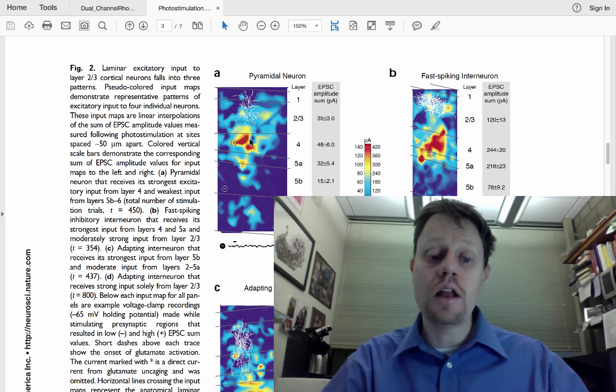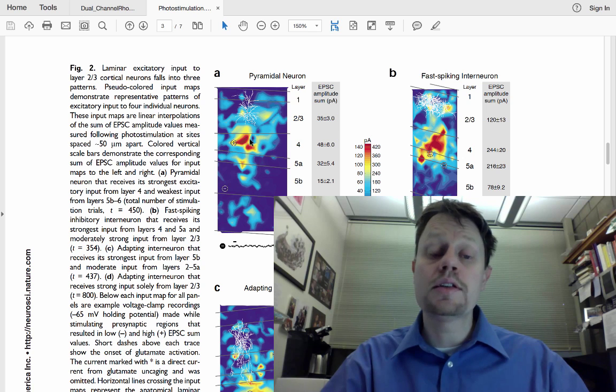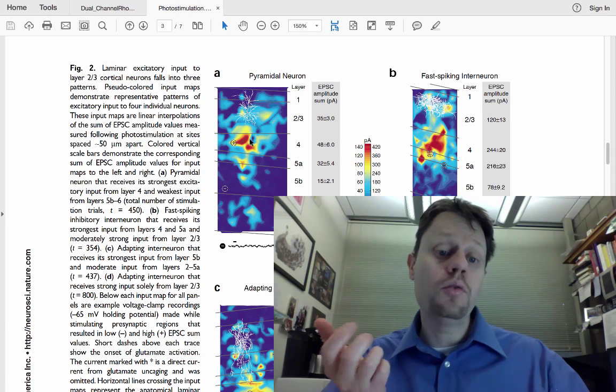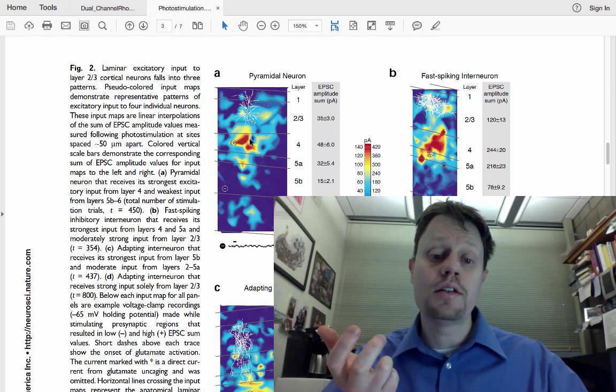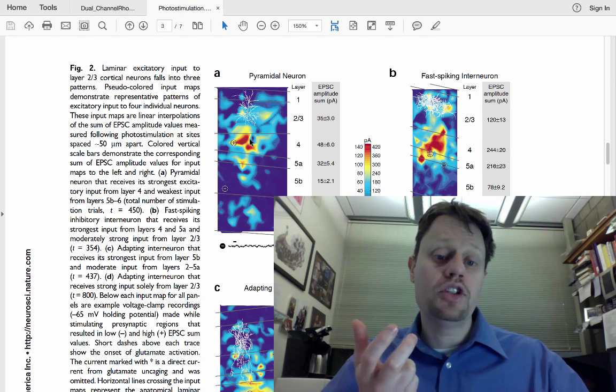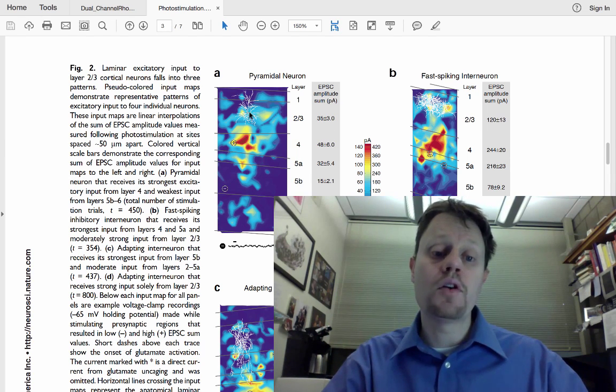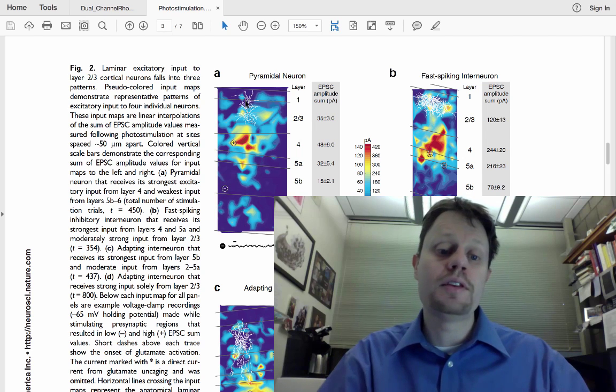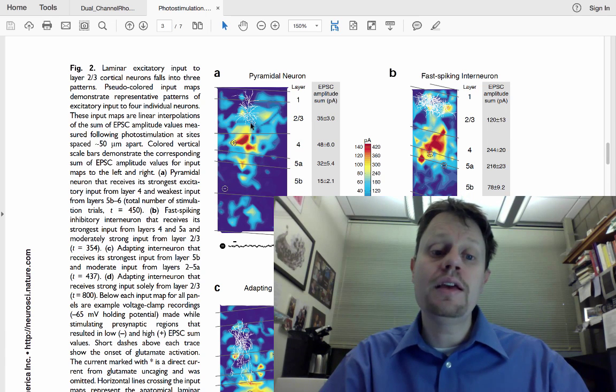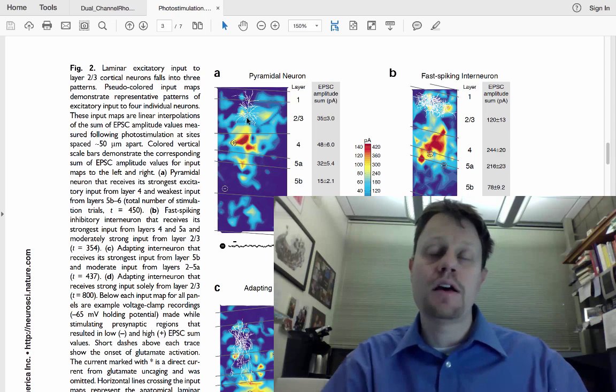And, in fact, with this two-color channelrhodopsin, we could even expand this a little bit further. Maybe we put traditional blue excited channelrhodopsin into excitatory neurons, and this red shifted channelrhodopsin into inhibitory neurons. We then record from a single neuron in layer 2-3, and then we see perhaps that all of the excitatory inputs are made up onto the apical dendrite, that is the dendrite that extends up from the cell body, and all of the inhibitory connections are made onto these basal dendrites, or the dendrites that extend down from the cell body.